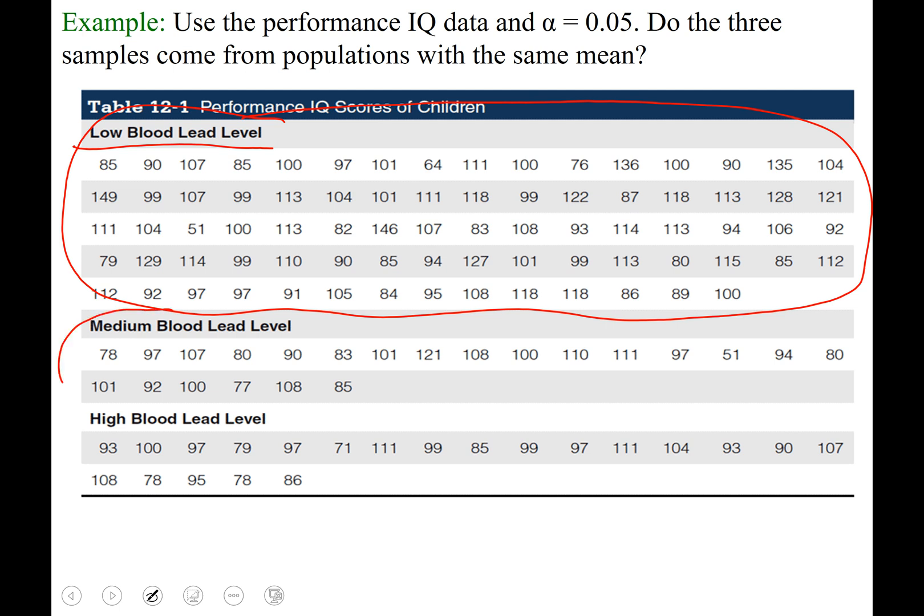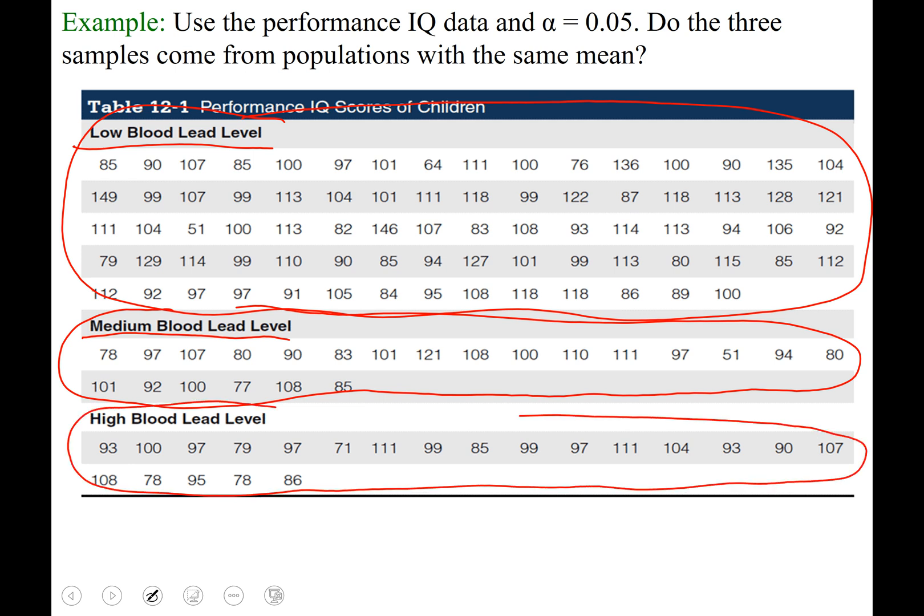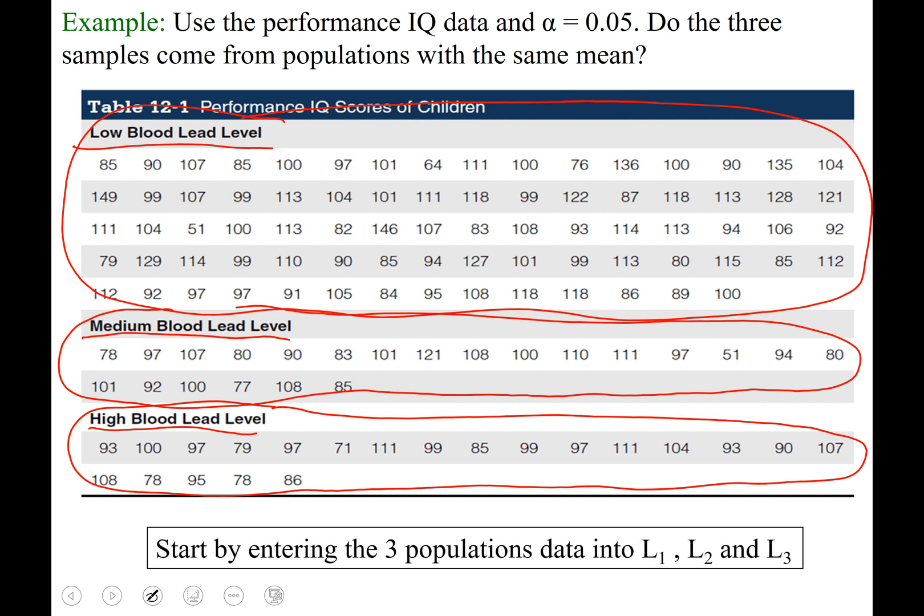Here we have our second population. The group of IQ scores from children that have medium blood lead levels. And our third population is here. It's a group of IQ scores from children that have high blood lead levels. So what we are being asked to do is compare the means of these three populations. And to do that, we run a test called ANOVA.